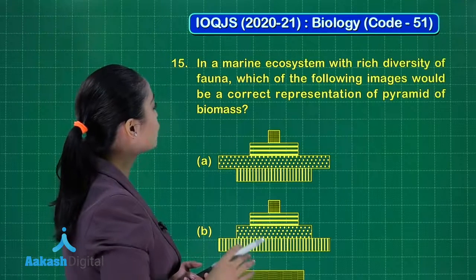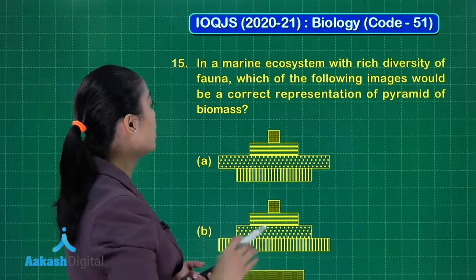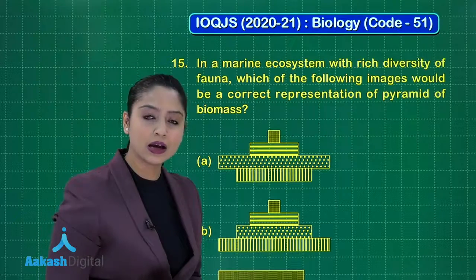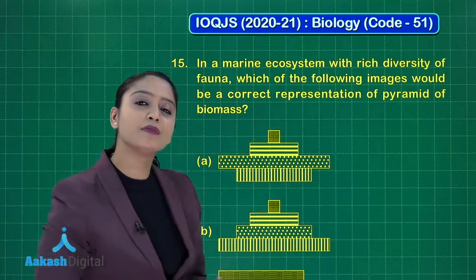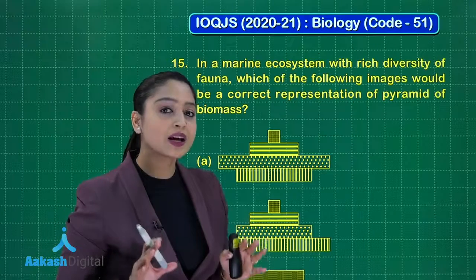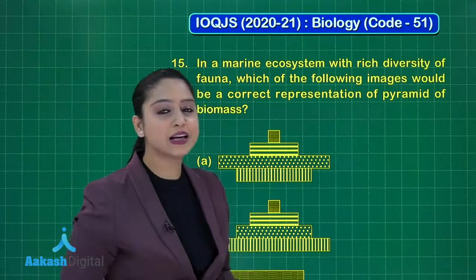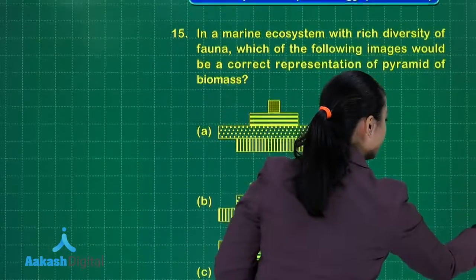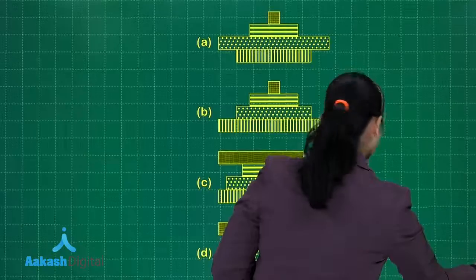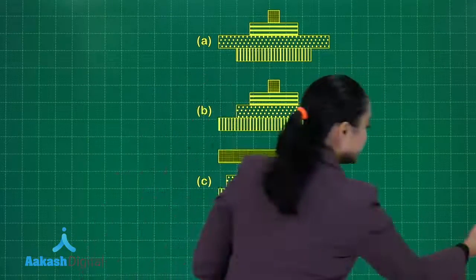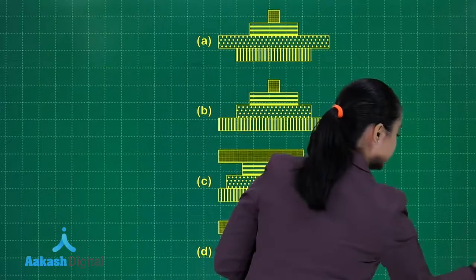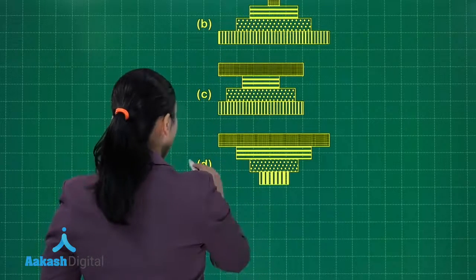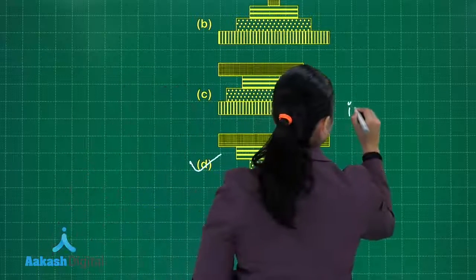The next question: in a marine ecosystem with rich diversity of fauna, which image is the correct representation of the pyramid of biomass? The pyramid of biomass is normally upright, but in a marine ecosystem it is inverted. Looking at the options, the inverted pyramid corresponds to option D — that is the correct answer.